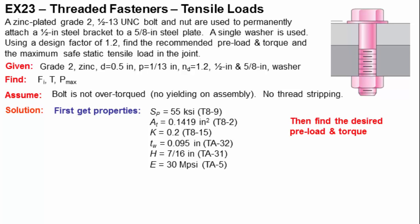Once we have all those properties, we move into directly finding the desired preload and the torque. So this is a pretty straightforward calculation once we have all these properties. To get the desired preload, we take the fact that it's a permanently attached joint, or it's designed to be permanently attached, so that gives us a 90% factor on the preload. In other words, 90% of the proof load is what we use for our preload. So we take 0.9 times the proof strength of 55 KSI times the tensile cross-sectional area of 0.1419. That gives us approximately 7,000 pounds as our desired preload.